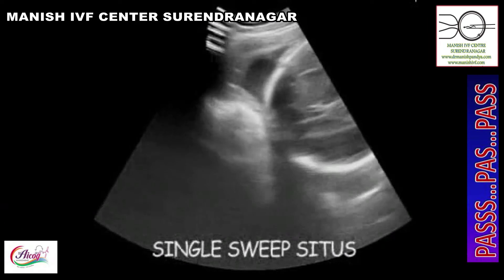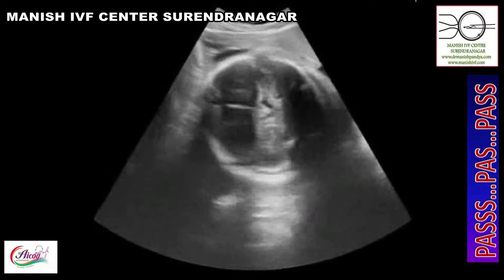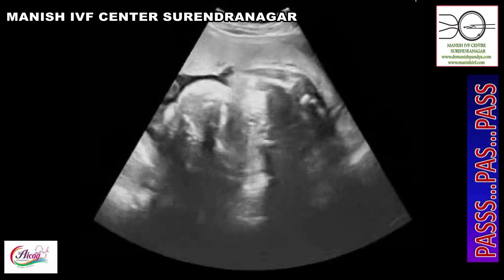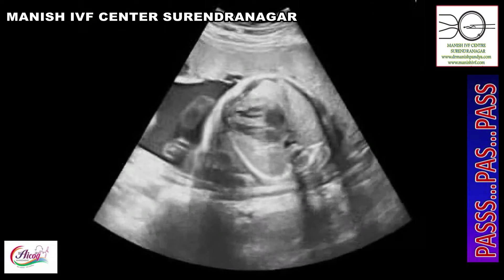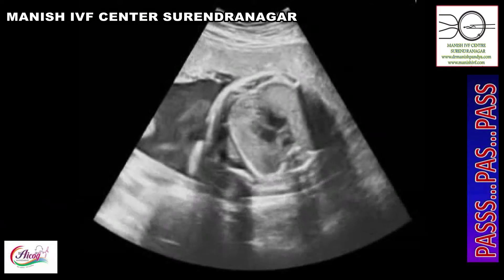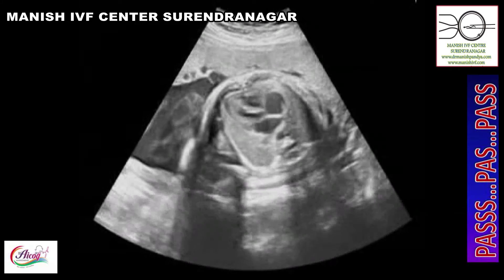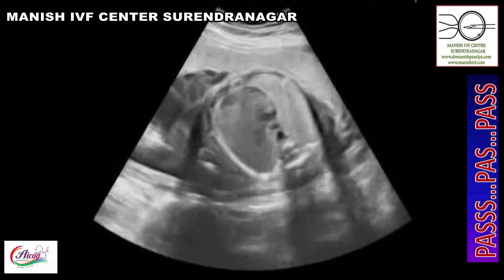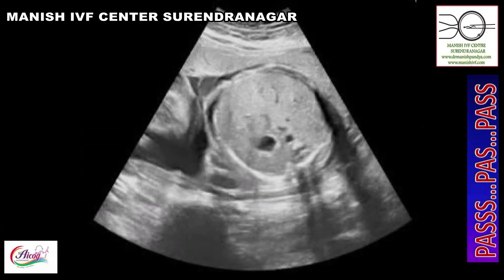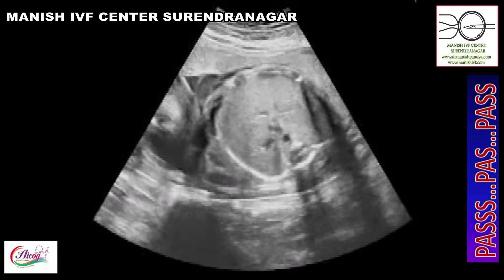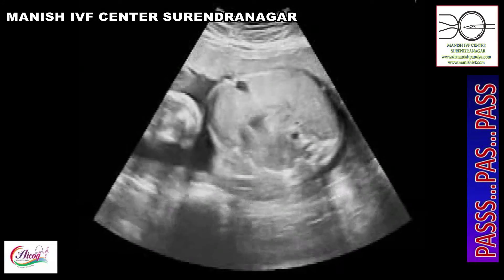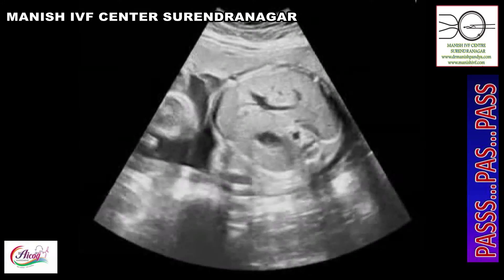For normal situs, first place the probe over the fetal head and confirm synchronicity between the probe and machine. Then move the probe towards the fetal heart — the heart usually occupies the left side of the chest. Look for the stomach bubble on the left side of the heart, the IVC on the right side, and establish the situs of the heart in a single sweep.